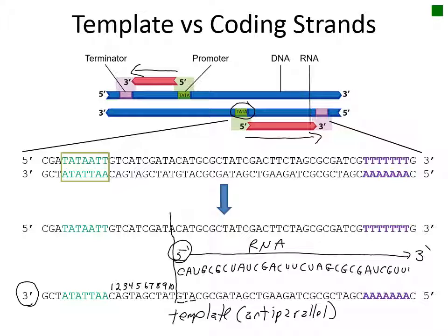This process will continue all the way down the DNA strand until you get to the end of the terminator sequence. As you look at the newly transcribed RNA sequence, you should notice that it is identical to the non-template strand of DNA, also called the coding strand, because it matches the code of the RNA sequence.